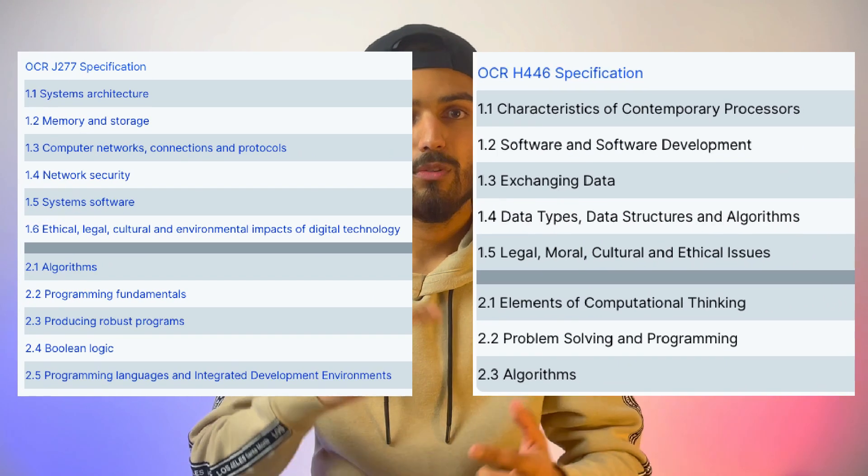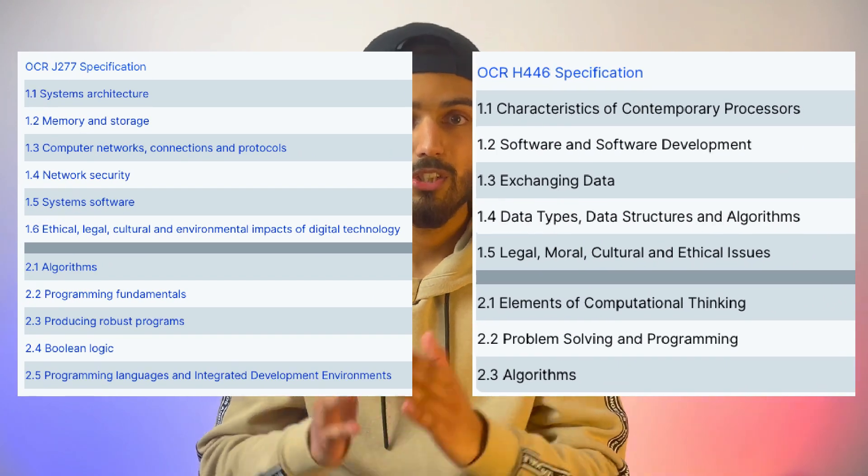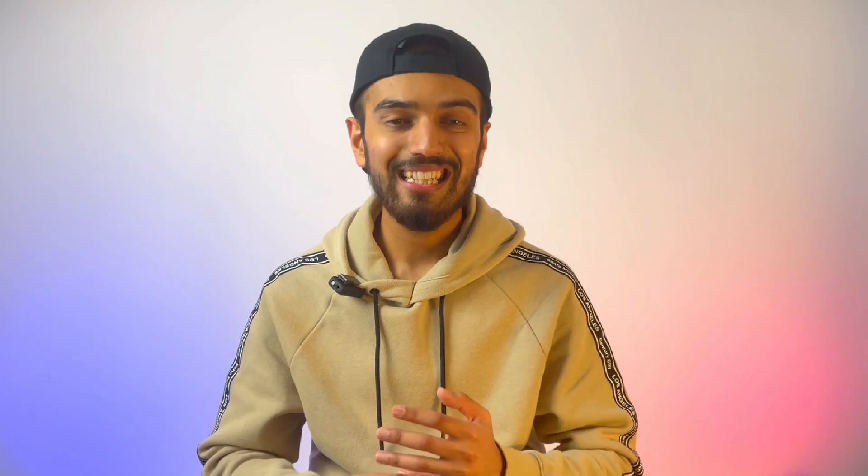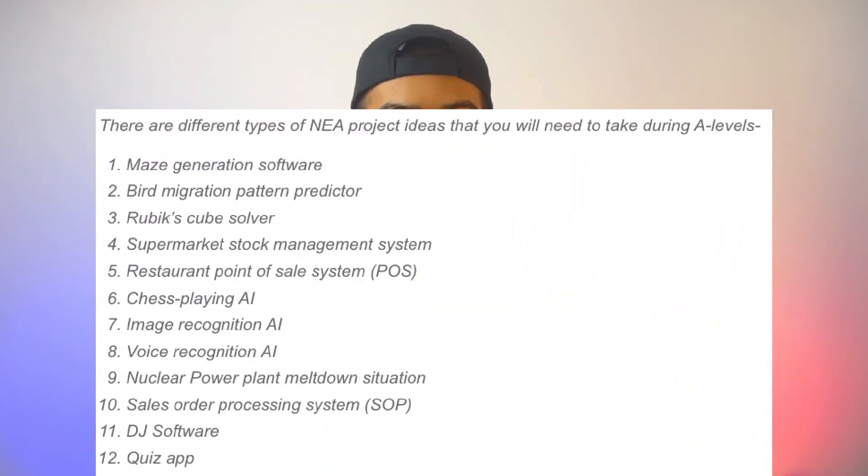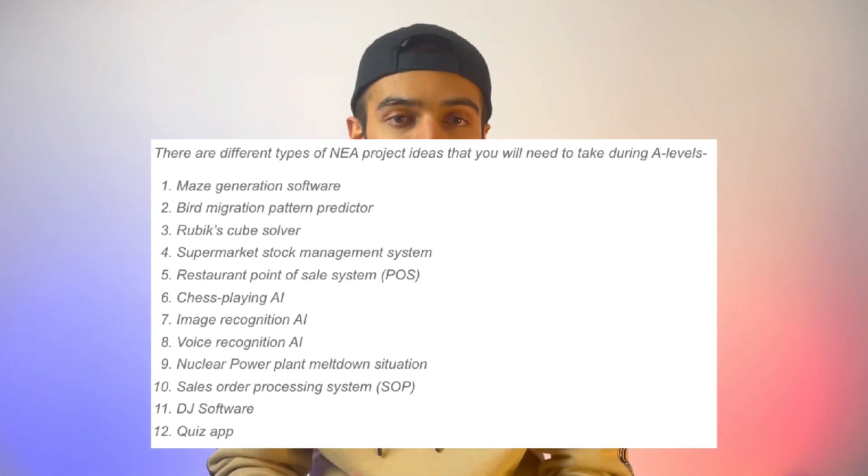Paper 1 covers topics such as CPU, databases, and networks. On the screen you should see the GCSE specification on the left side and the A-level specification on the right side so you can clearly see the differences. Calculators are not allowed in any of these papers. Each paper is out of 140 marks — a total of 280 — which is worth 80% of your A-level course.